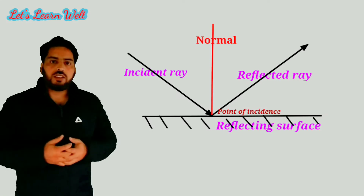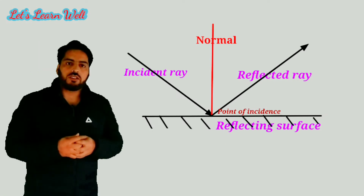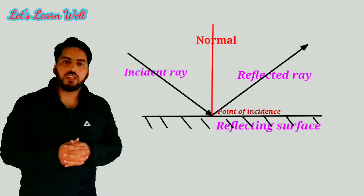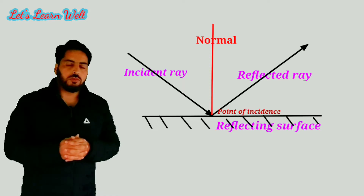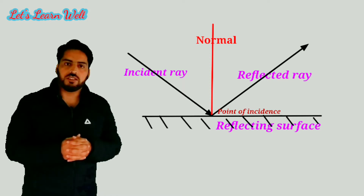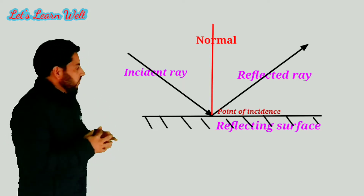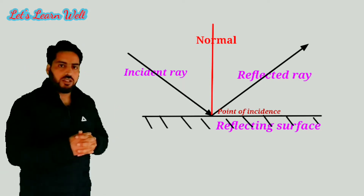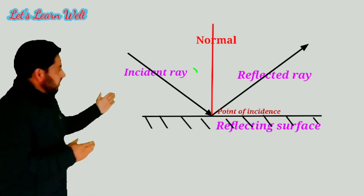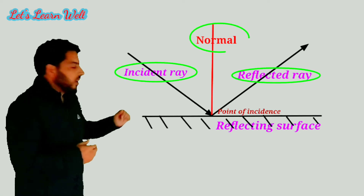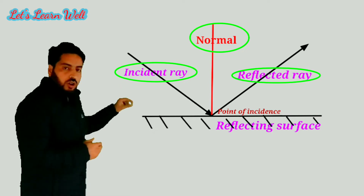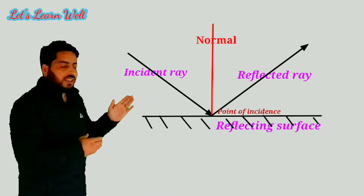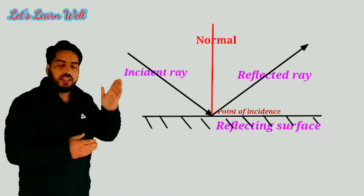Let's first understand the statement of the first law of reflection. The first law of reflection states that the incident ray, the reflected ray, and the normal at the point of incidence all lie in the same plane. As you can see in the figure, you need not memorize this statement — you can simply follow the figure. The incident ray, the reflected ray, and the normal at the point of incidence all lie in the same plane.